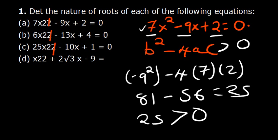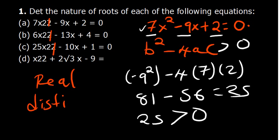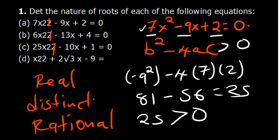Whenever the discriminant is greater than 0, we find two different points where the curve cuts the x-axis — real and distinct roots. If the discriminant is a perfect square the roots are rational, because you can express them as fractions. If it is an imperfect square, like the square root of 2, the roots are irrational numbers that cannot be expressed as fractions.